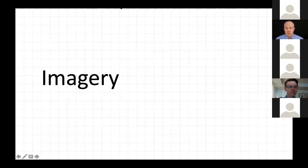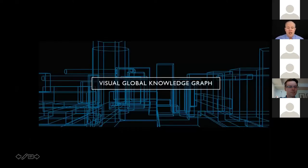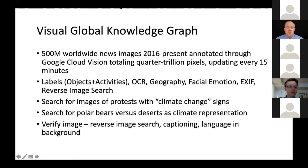I'm going to start with still imagery, since this is the more simplistic side of video for us, and something called the Visual Global Knowledge Graph. Since 2016, we've analyzed roughly about half a billion images, totaling about a quarter of a trillion pixels. Every 15 minutes, we basically take a sample of all the imagery appearing in the online news media around the world and analyze it through Cloud Vision. This looks at objects and activities, and OCRs in about 300 languages.